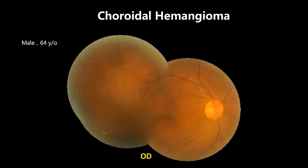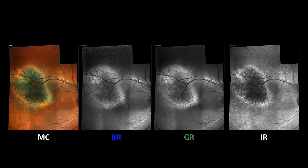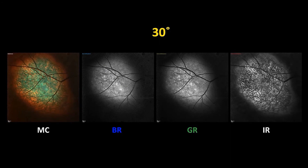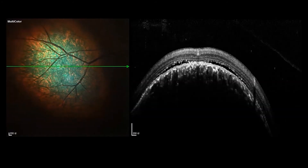For choroidal hemangioma, we can vaguely see the lesion in the superior temporal retina on color fundus photo. When we perform multicolor imaging, we can clearly observe the margin of the hemangioma and structural changes in different wavelength reflectance, as well as multicolor. They are even clearer on the 30-degree multicolor view. Plus OCT, we can confirm the diagnosis.